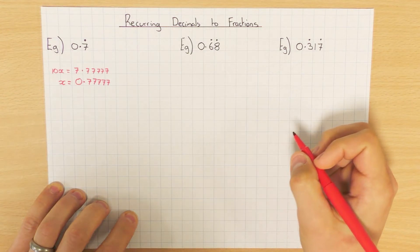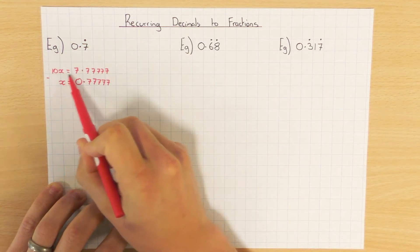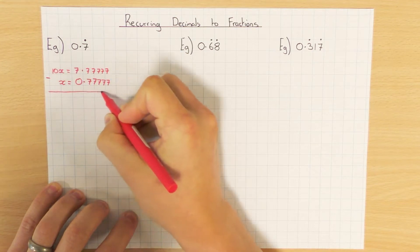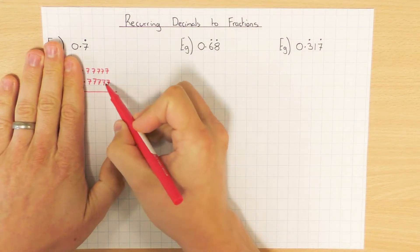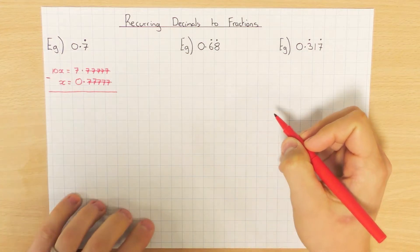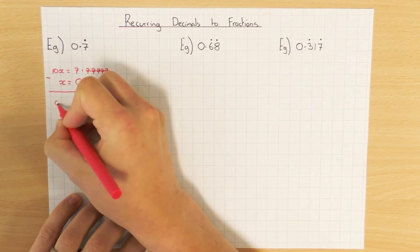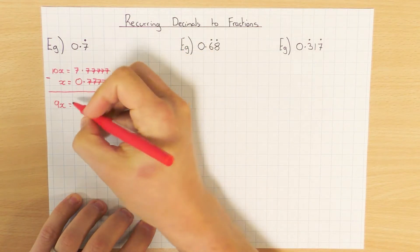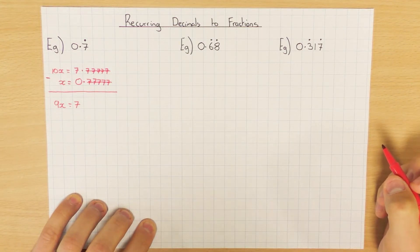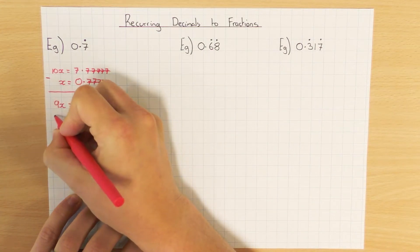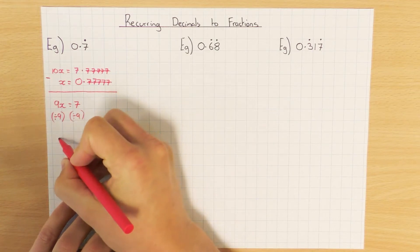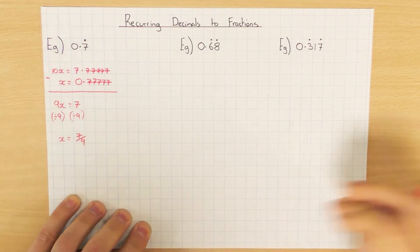The reason I do that is because I'm going to take the two away — that's why I wrote that other line — because when I take them away I'm going to be left with a positive number. All of these reoccurring parts cancel out, which is why we do it. 10x take away x leaves me with 9x, and 7 take away 0 just leaves me with 7. We just need to rearrange: divide both sides by 9 to get x on its own. So x equals 7 over 9, and that's it — you're done.